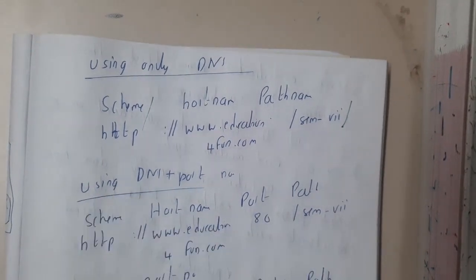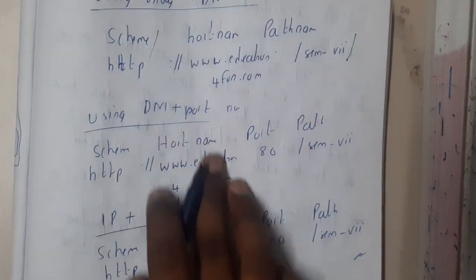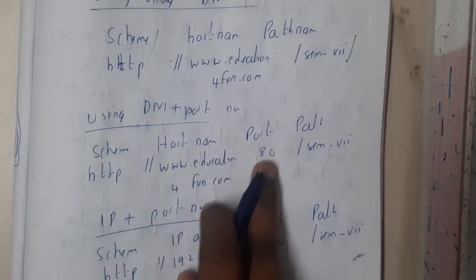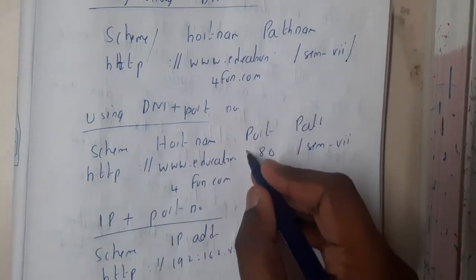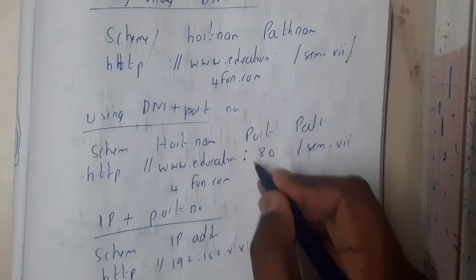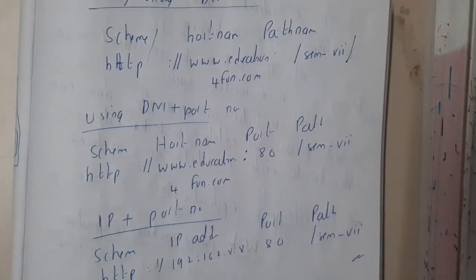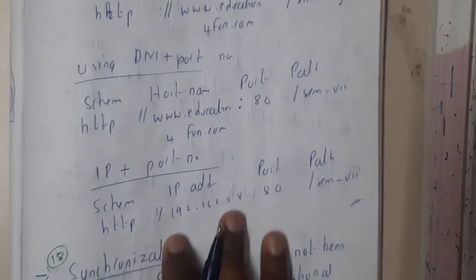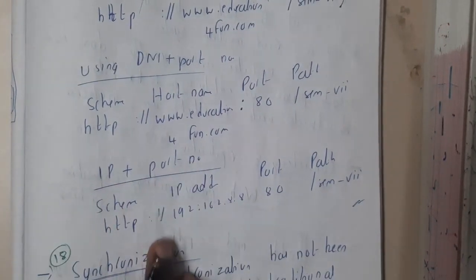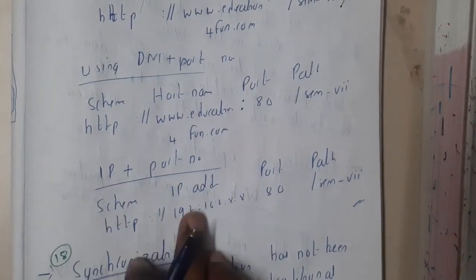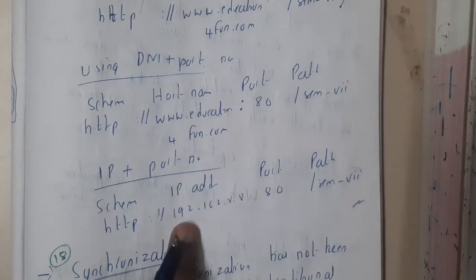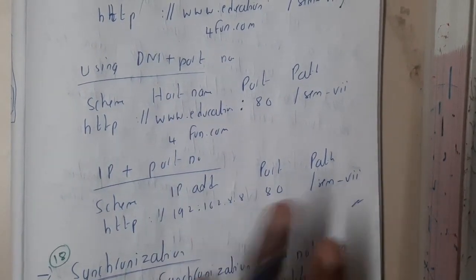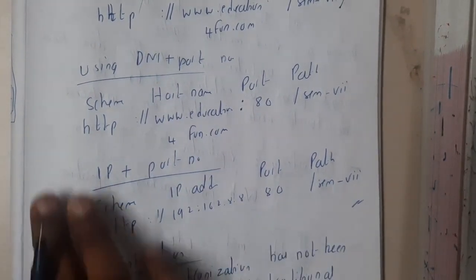Similarly, with a port number — if you add the port number at the end of the host with a colon, that is nothing but the port number. Similarly, with IP plus port number — here, instead of using the host name, we are using the IP address along with the port number and path.